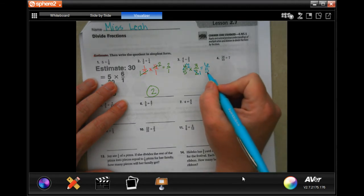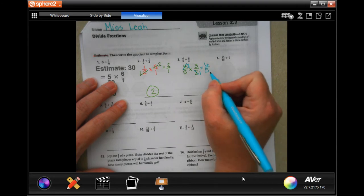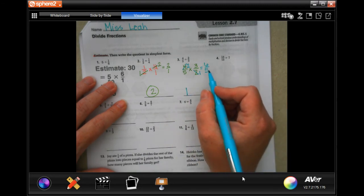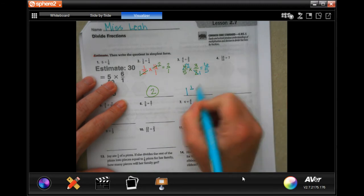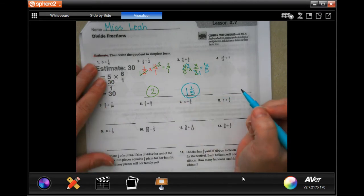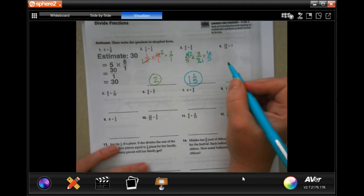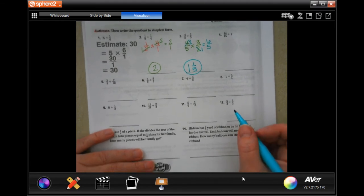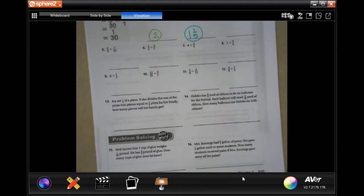Well, simplest form means that I have to get it to where the top number is smaller than the bottom number. So I have to go, how many times does 5 go into 6? Well it goes in one time. I would have 1 left over, and then I keep my denominator. So I want for you guys to go ahead and do 4 through 12 exactly the same way. It should be pretty easy for you guys at this point.